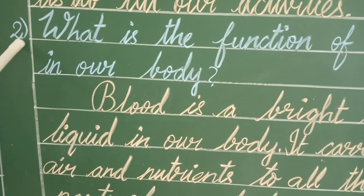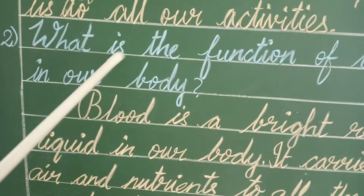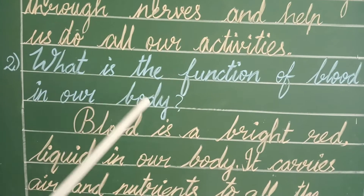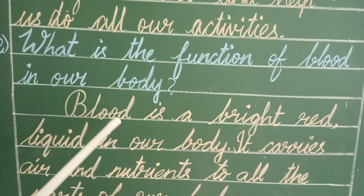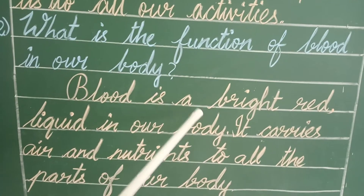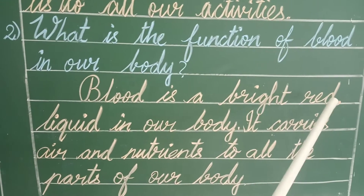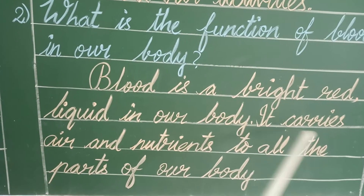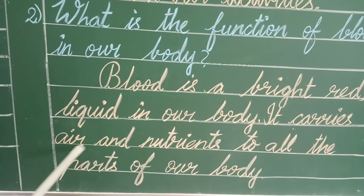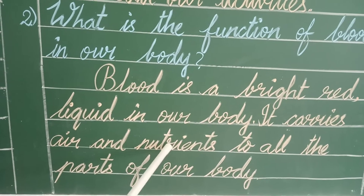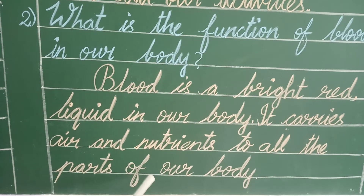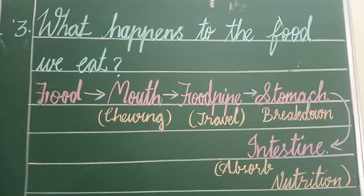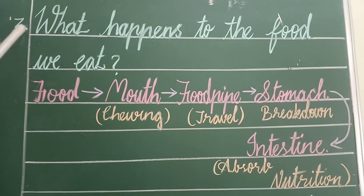Second question: What is the function of blood in our body? Blood is a bright red liquid in our body. It carries air and nutrients to all the parts of our body.